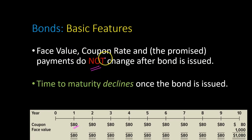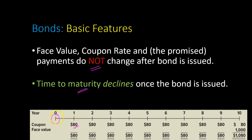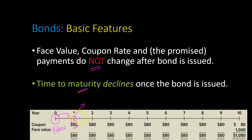Over time, the time to maturity declines. If an individual lent money to the corporation on January 1st, 2022, received the first $80 payment, and then decided to sell the bond, the person who now holds it will only be receiving payments for the next nine years and then the face value. So the time to maturity of the bond has declined. As you will see in subsequent videos, this can have implications for how much you're willing to pay — the price of the bond — at a particular point in time.